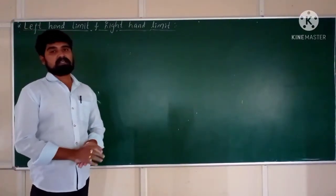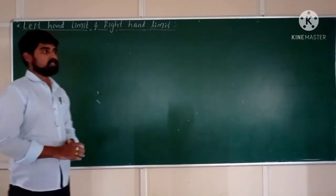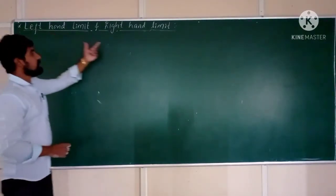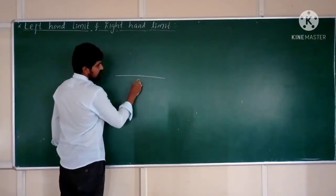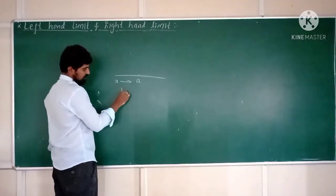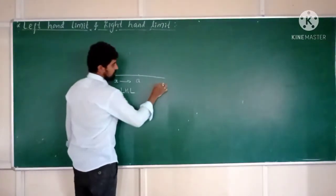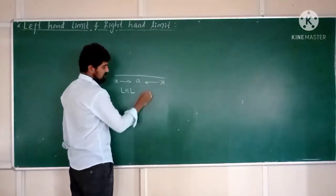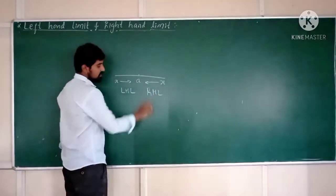Good morning my friends. Last class we discussed the limits of trigonometric functions. Today I am going to discuss a new concept — left-hand limit and right-hand limit. If x is approaching to point A from its left side, it is called the left-hand limit, simply written as LHL. If x is approaching to point A from its right side, we call it the right-hand limit, simply written as RHL.